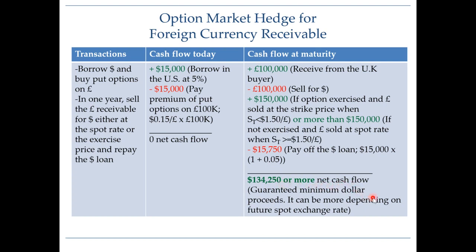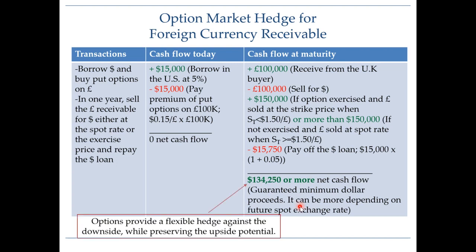With options, it's not a single number but a range. $134,250 is the guaranteed minimum dollar proceeds you will receive regardless of the future spot exchange rate, but depending on the future spot rate, the dollar proceeds could actually be higher. The advantage of options is that they provide a flexible hedge against the downside while preserving upside potential. You have locked in a minimum floor amount of dollar proceeds, but depending on the future exchange rate, you could actually receive more dollars than this number.